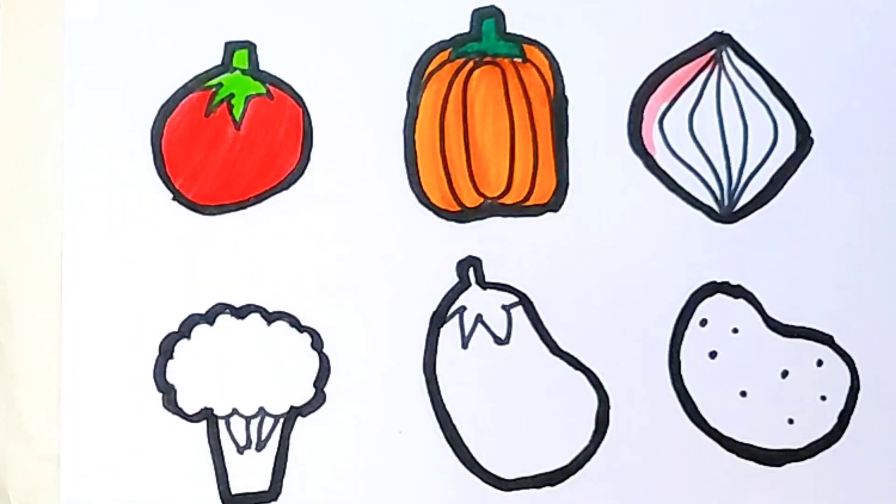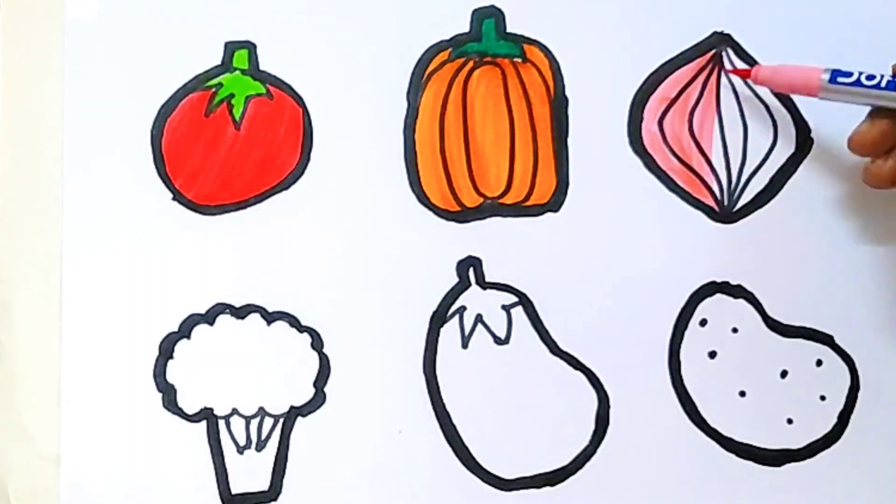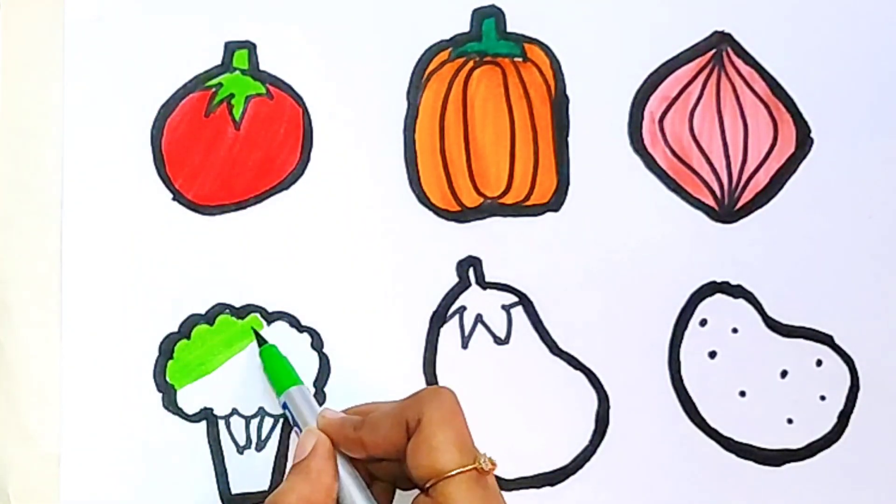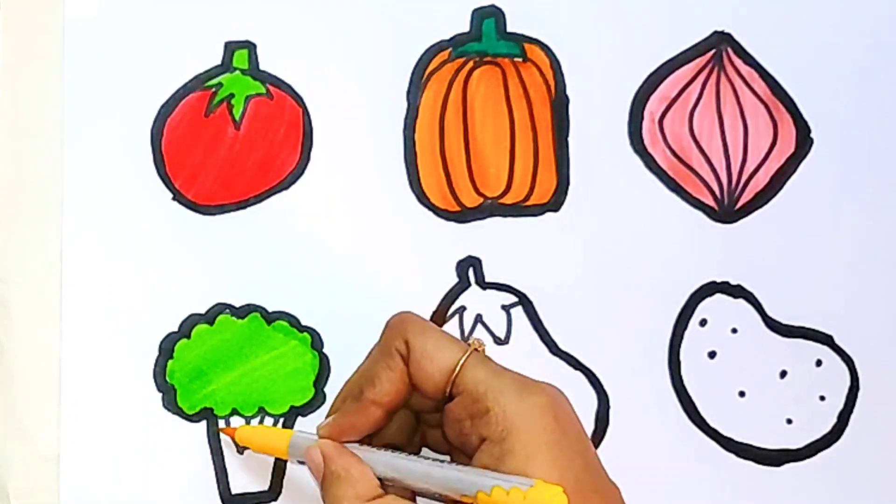This is pink color, pink color for the onion. Green color, this is light green color, yellow color.